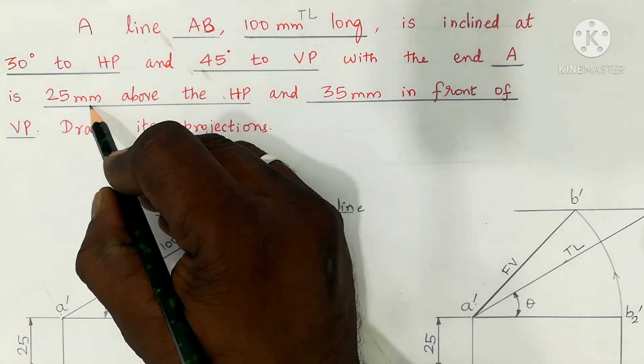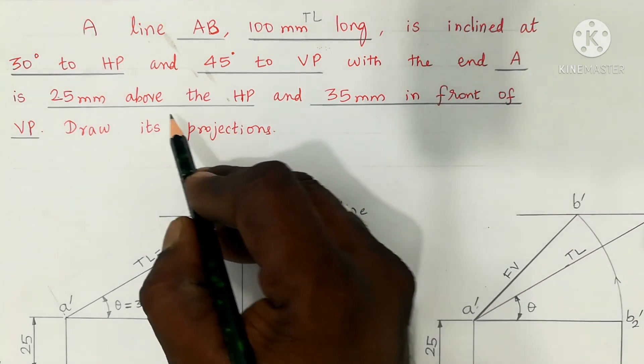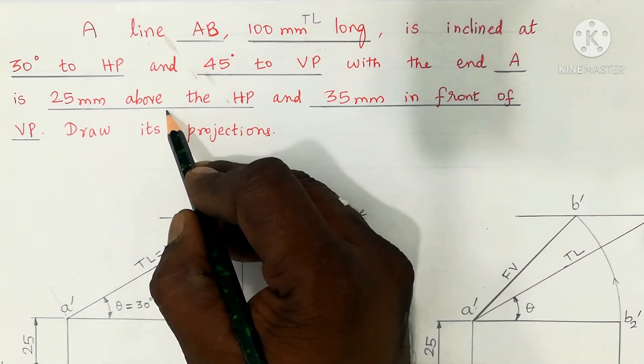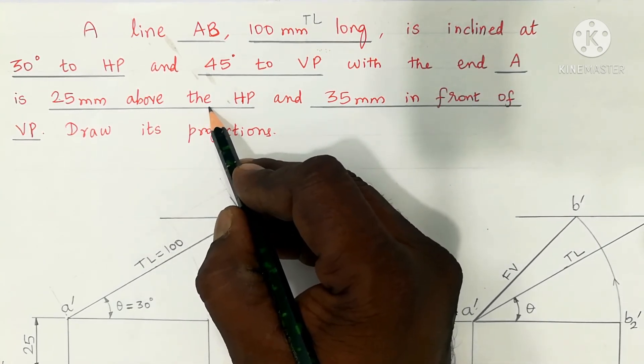Point A is located 25mm above HP and 35mm in front of VP. Above HP and distance, that is location of point A is 25mm above HP.